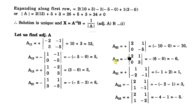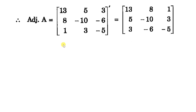Then adjoint A is the transpose of this cofactor matrix, which gives: 13, 5, 3, 8, minus 10, 6, 1, 3, minus 5.